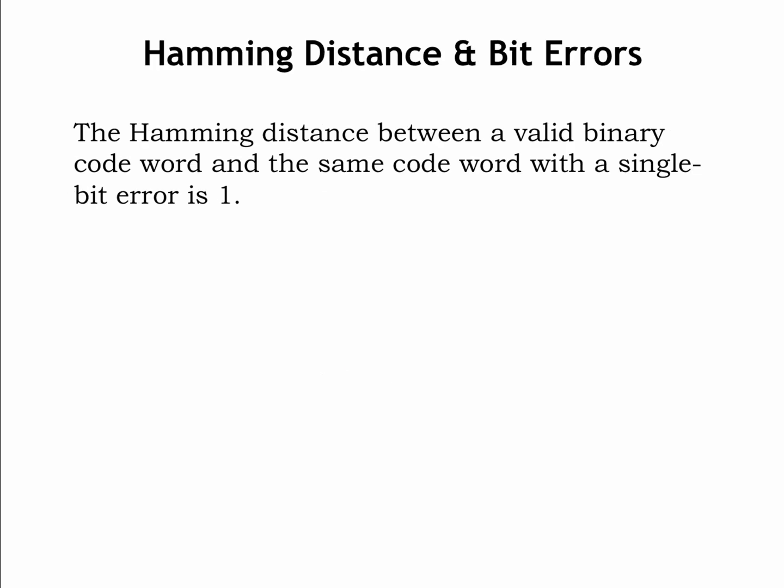How does this help us think about single-bit errors? A single-bit error changes exactly one of the bits of an encoding, so the hamming distance between a valid binary codeword and the same codeword with a single-bit error is 1.